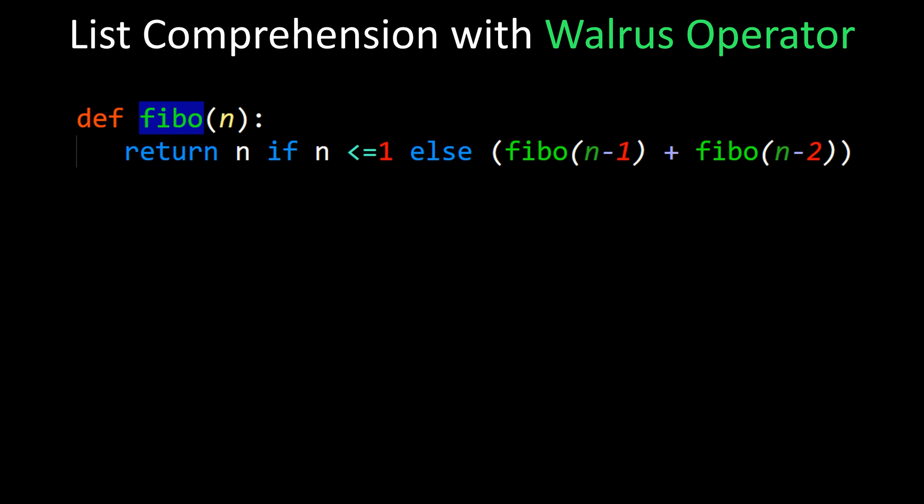Now I already did a video on the most controversial Python feature, which in my opinion is the walrus operator. It comes into play nicely with list comprehensions. Now if we take some difficult-to-compute function like fibo here,